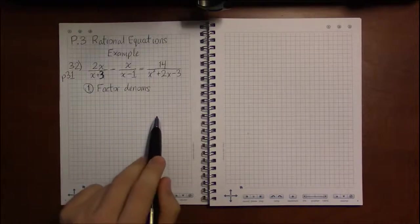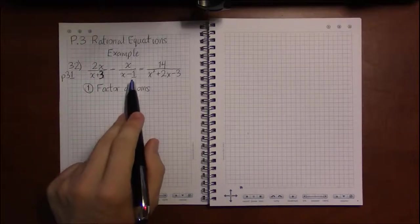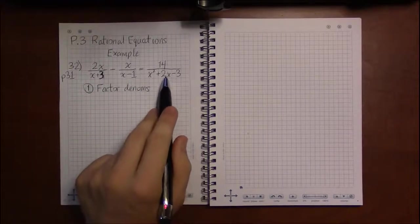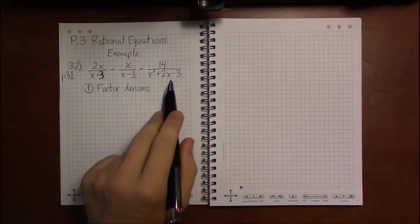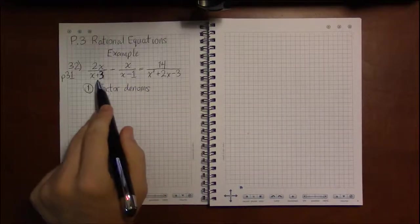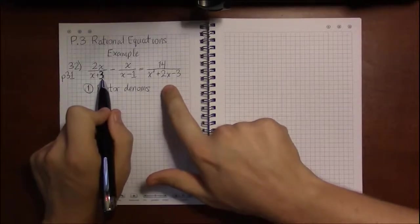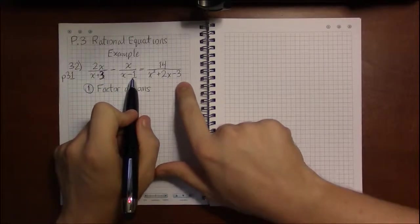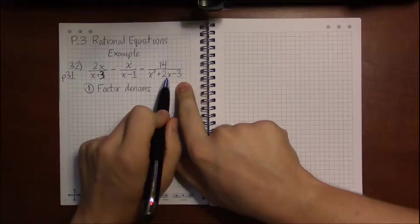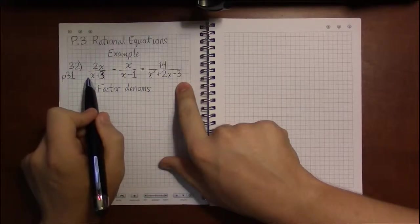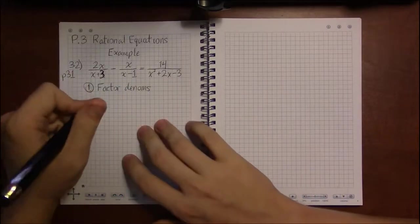So our first step is to factor all the denominators, and the first two look pretty factored to me, but the third one looks like it could use some factoring. These two are probably going to be likely candidates for the factors. Let's see. 3 times minus 1 is minus 3, then 3x minus x will be 2 plus 2x, and then x times x will be x squared. So yeah, these two are the factors of this denominator.